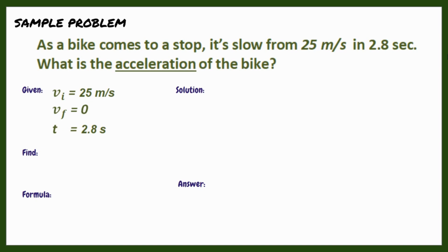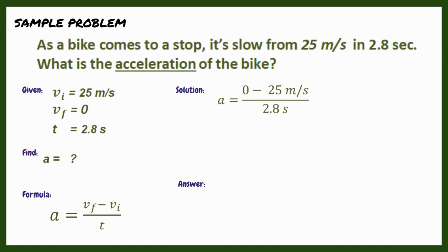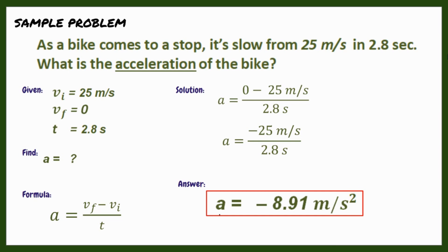Next, we write the unknown — the acceleration, which is what we need to find. The formula we are going to use is A = (V_F − V_I) / t, or acceleration equals final velocity minus initial velocity divided by time. For the solution, we substitute the values: A = (0 − 25 m/s) / 2.8 s = −25 m/s / 2.8 s = −8.91 m/s².